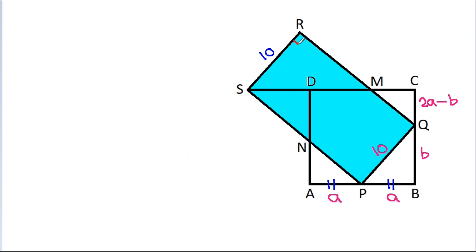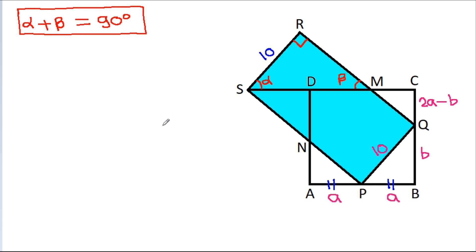Now, this angle will be 90 degrees. Suppose this angle is alpha and this angle is beta. Then alpha plus beta will be equal to 90 degrees. And this angle will be 90 degrees, and this angle will be 90 degrees minus beta, that will be alpha.